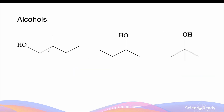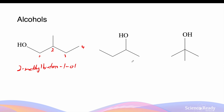Our first alcohol group has the longest chain length of 1, 2, 3, 4, meaning that this must be a butanol. Because there is a methyl on carbon number 2, this is 2-methyl-butan-1-ol. Similarly, the second one is also a butanol since there are 4 carbons. However, because the alcohol is on carbon number 2, this is a secondary alcohol: butan-2-ol.